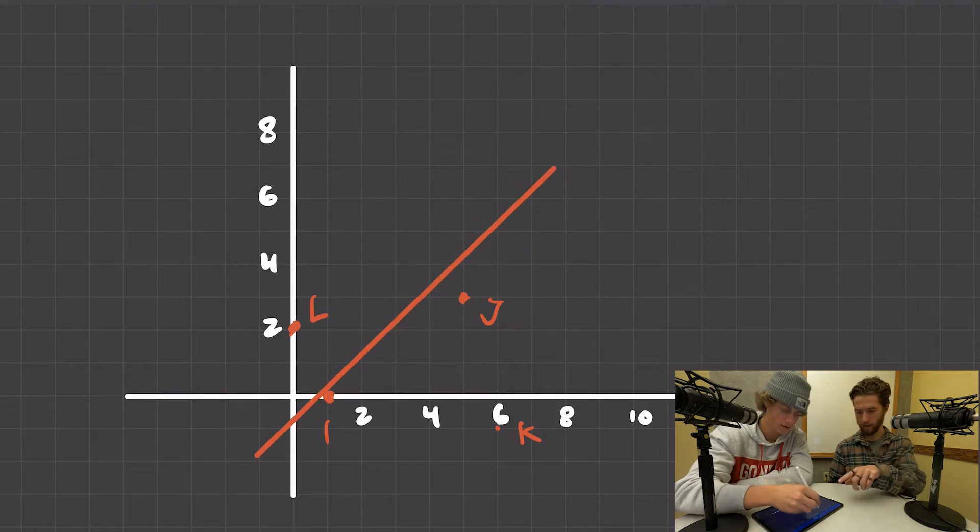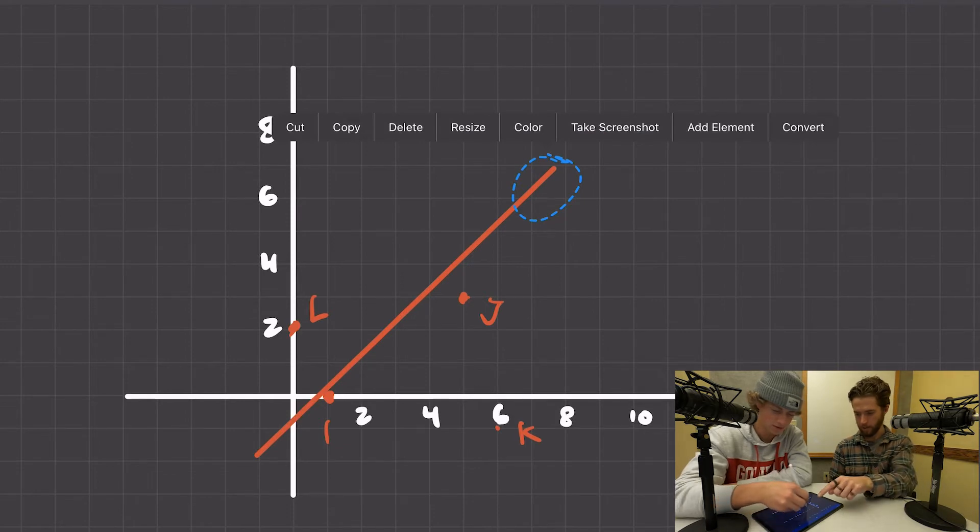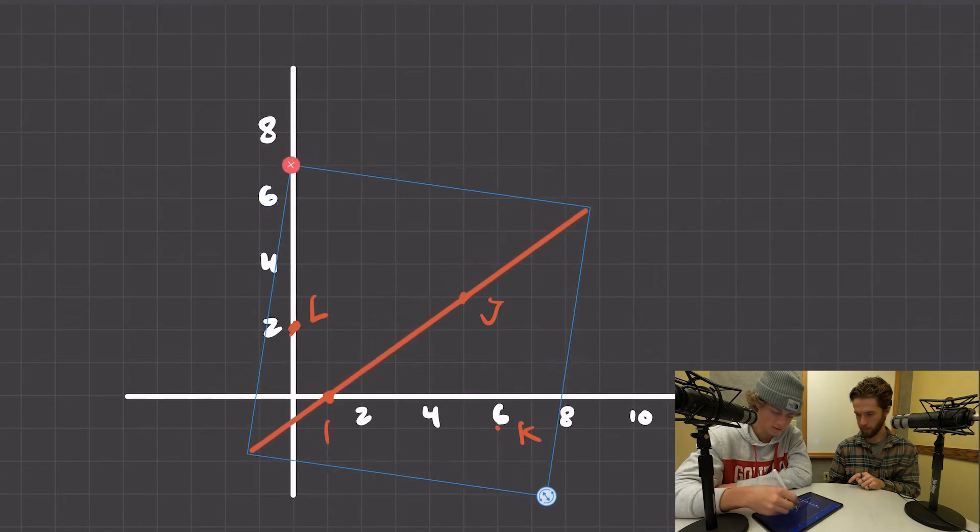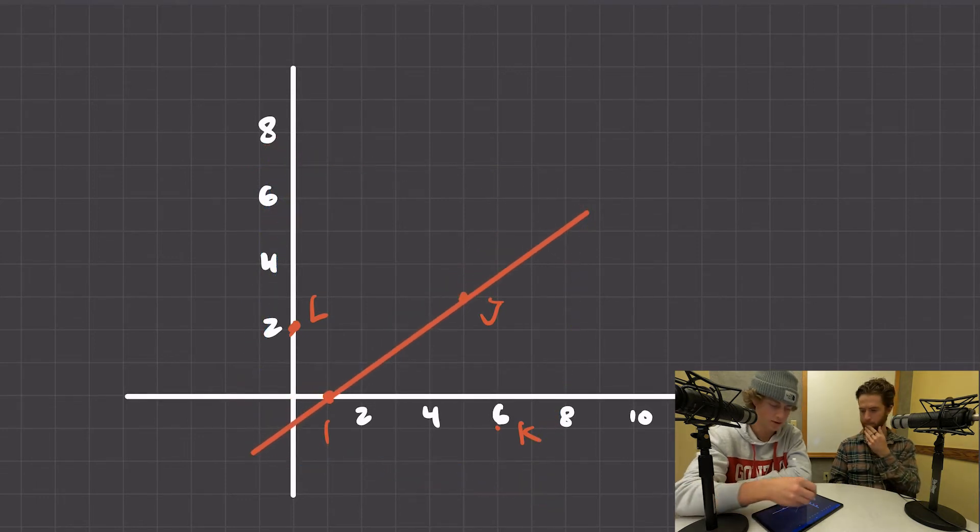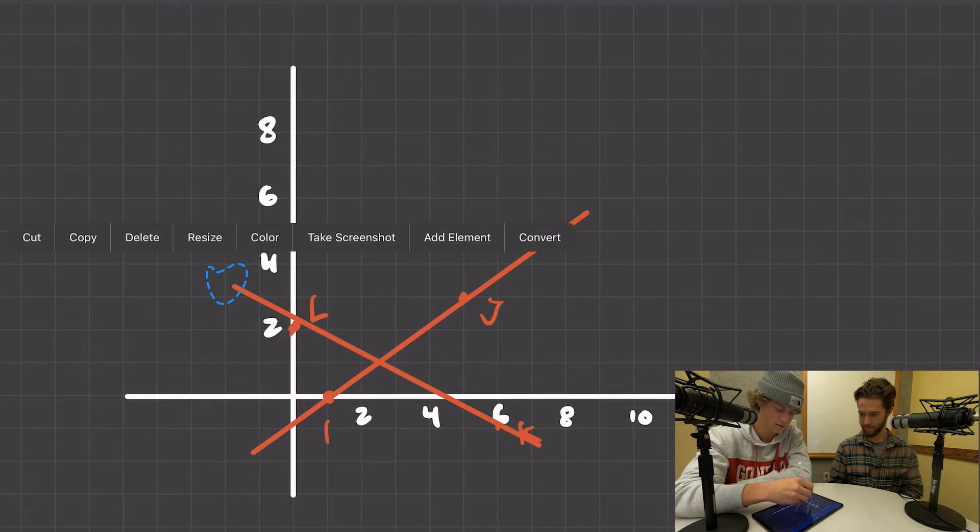Now check this out. Do that and then, yeah, you've got it. Circle it, tap it, resize. But resize, that's your option to rotate down there. So you can rotate and move at the same time.